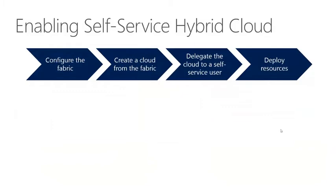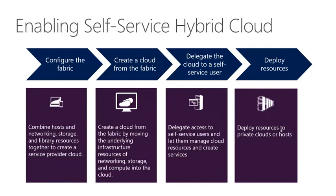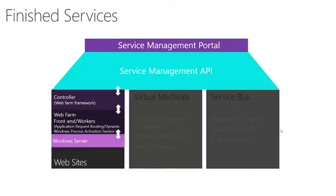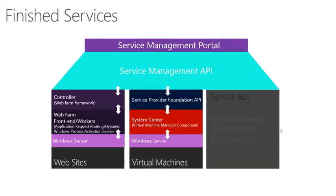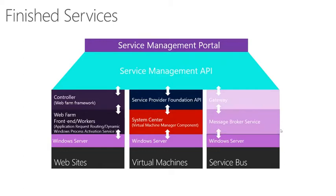We have workload portability and a consistent dev experience — taking our learnings from Windows Azure and bringing them to the on-premises or service provider environment through the Azure Pack for Windows Server. To enable self-service hybrid cloud, there are four major steps: configuring the fabric, creating a cloud from the fabric, delegating that cloud to a self-service user, and then deploying resources. This is skewed toward infrastructure as a service, but the concepts are fairly standard across IaaS, SQL Server, and websites. By utilizing the Windows Azure Pack, through a single API and portal we can create finished services such as websites, virtual machines, and service bus for messaging.